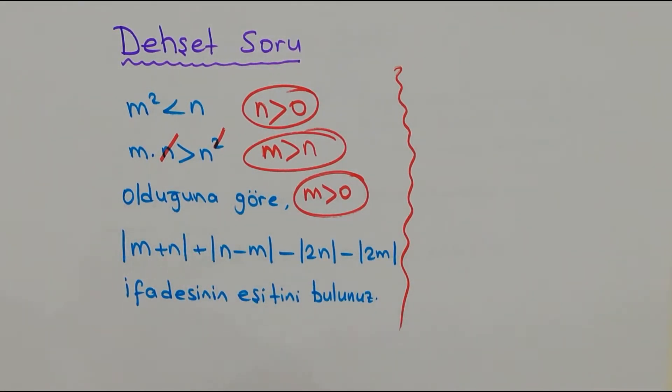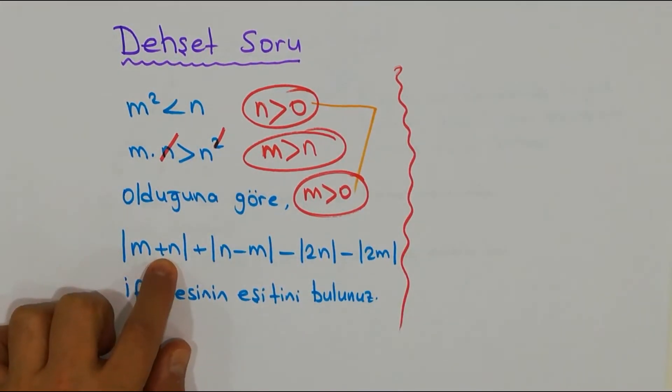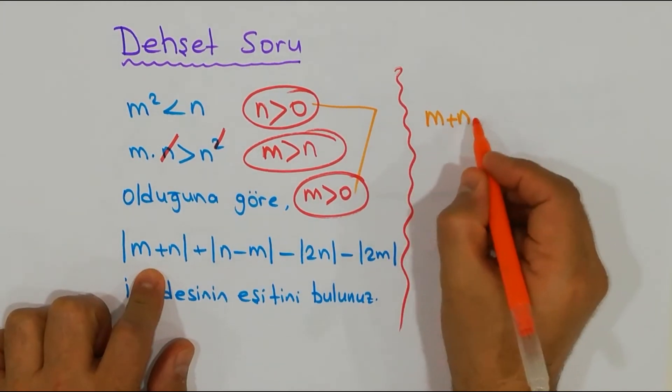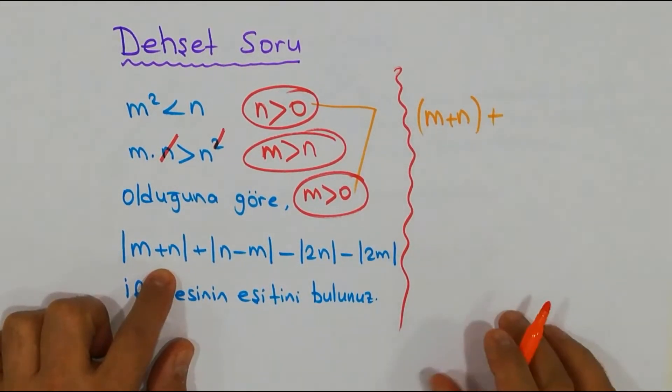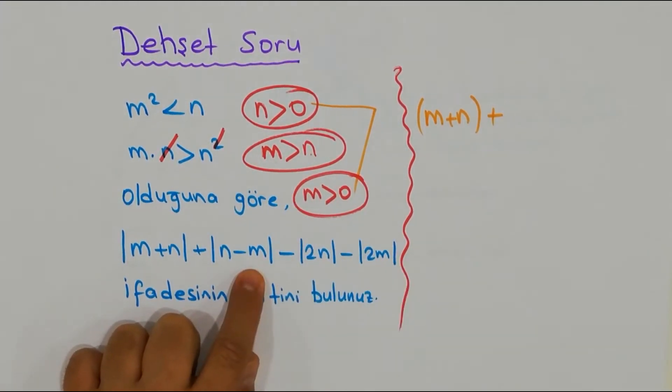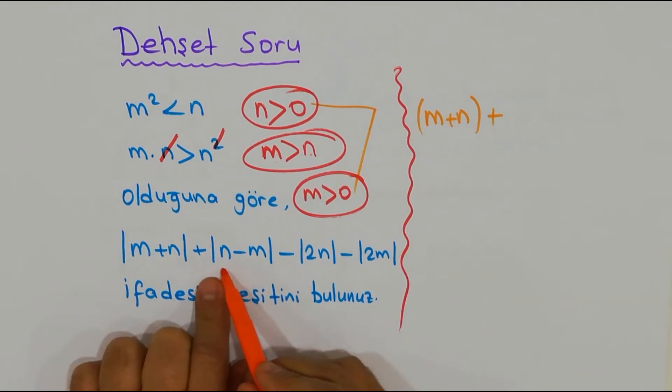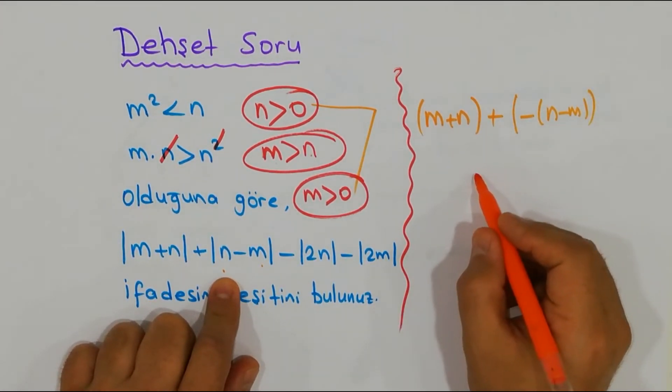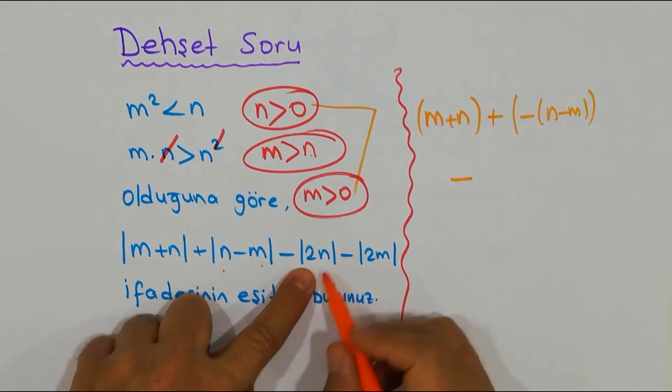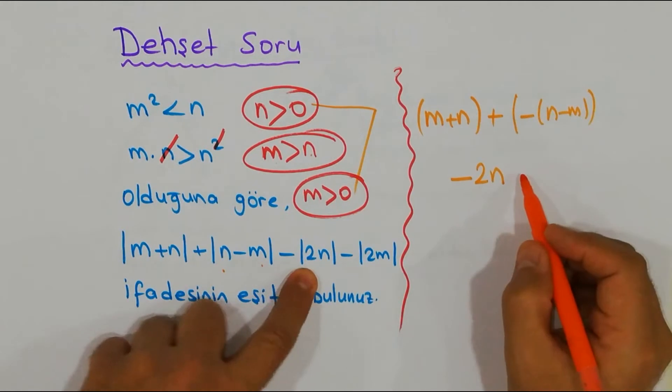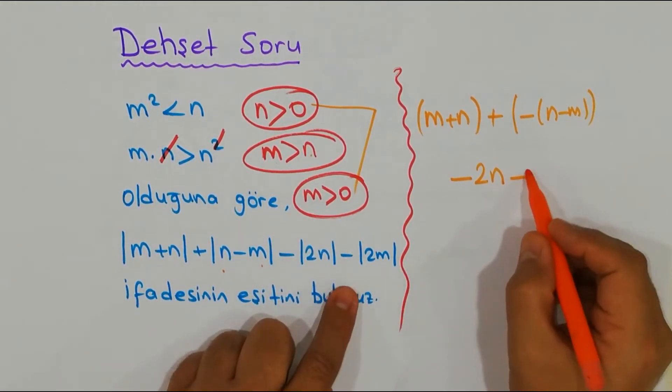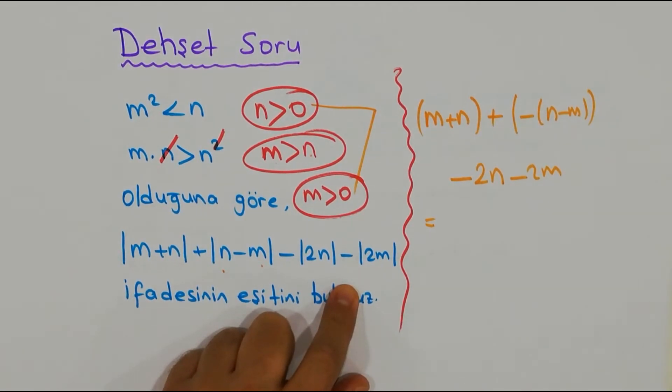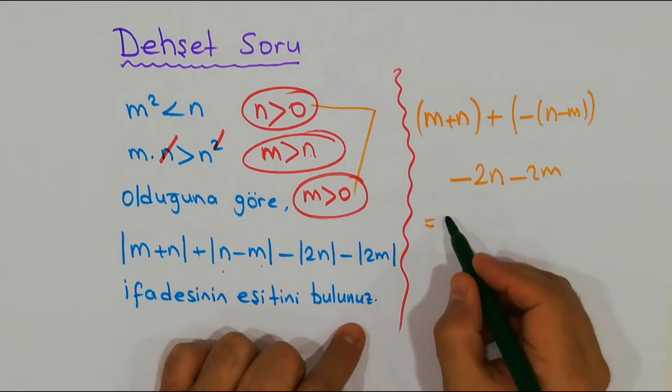Gel şimdi sonucu beraber hemen bulalım. Şurada şöyle bir zikzak yapalım. Şöyle arkadaşlar, |m + n|. Şimdi soruyorum: İki tane pozitif sayı var, topladınız, ne oldu? Kesinlikle pozitif. İçi pozitifse biz ne yapıyorduk? Olduğu gibi yazıyorduk, bu kadar. Peki |n - m|, soruyorum: n, m'den küçük mü? Evet. Peki siz küçük bir sayıdan büyük bir sayı çıkarsanız sonuç yüzde yüz negatif. Önüne bir eksi alıp çıkartım.